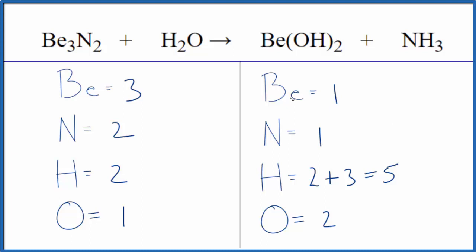Let's see, let's just fix the beryllium here. We could put a 3 in front of the beryllium hydroxide, 1 times 3, that'll give us three of those.